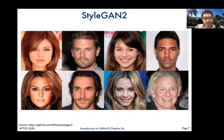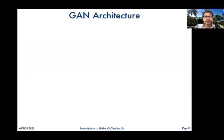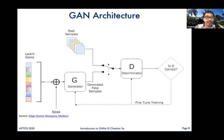So how do GANs do this? How can they generate faces they never saw before that don't exist, yet look like the real thing? I'll briefly explain the architecture. Internally, a GAN has two different neural networks: the generator and the discriminator. They are in a competitive, zero-sum game against each other.